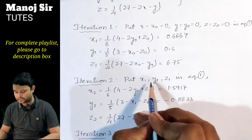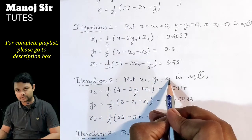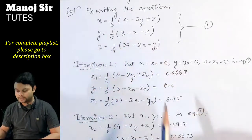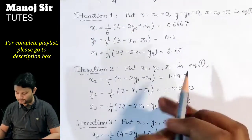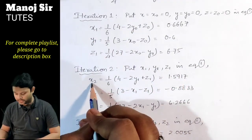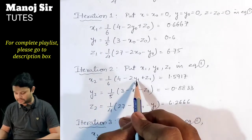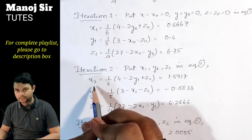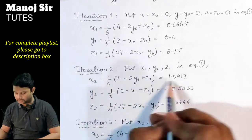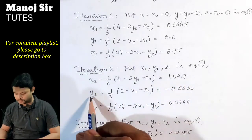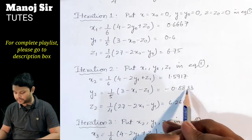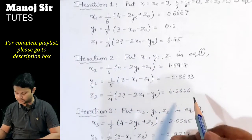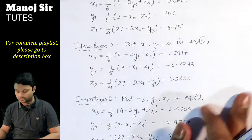For the second iteration, we substitute x1, y1, z1 into equation (1) to find x2, y2, z2 using subscript 1. We get: x2 = 1.5917, y2 = −0.8833, z2 = 6.2666.